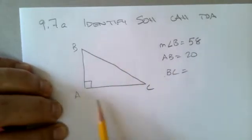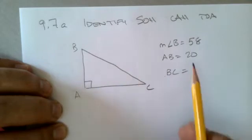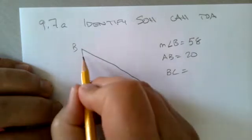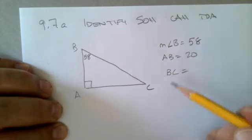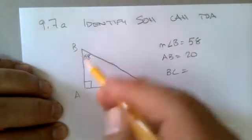As always, I recommend you draw this picture out on paper and see what it looks like. The measure of angle B is 58, so I'm going to add that in here. That's 58 degrees, and AB is 20. That means the distance from A to B is 20.